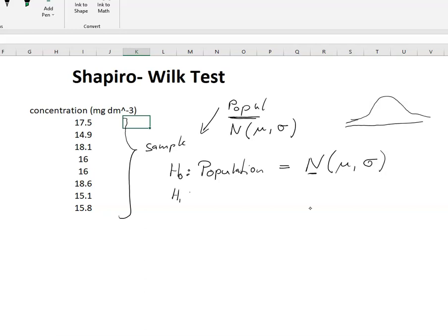The alternative hypothesis would be the population from which we have taken the sample is not a normal distribution with the parameters mu and sigma. And of course we don't know at this point mu and sigma, but the important thing is, is it normally distributed or not?